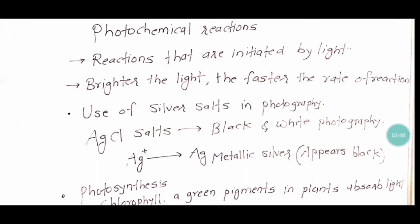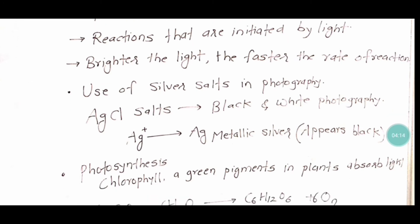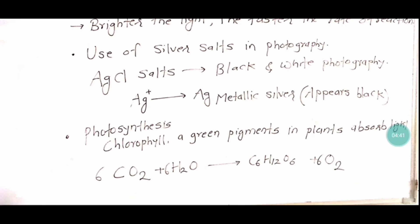Another factor that affects rate of reaction is light. Some reactions are initiated by light — if brighter or more intense light falls on the reaction, it increases the rate of reaction. For example, silver salts are used in photography. When light falls on the salt, silver ions (Ag⁺) are converted to metallic silver (Ag), which appears black in black-and-white photography.